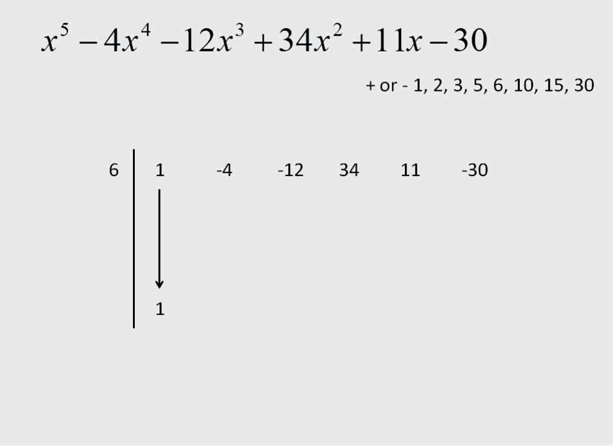First, we take our initial coefficient and drop it down. And then we will multiply 6, which is our number, one of our factors that we're going to test out. So we do 6 times 1, and we'll put the result up there. 6 times 1 is 6. And negative 4, then we join those together using addition. Negative 4 and positive 6 will leave us with positive 2.